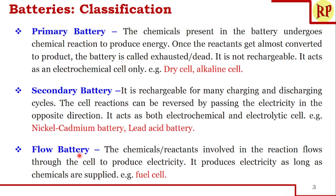In a flow battery, as long as we supply the chemicals — that is, the reactants involved in the reaction — through the cell, we get electricity. Once we stop the supply, we will not get electricity. An example is the fuel cell.